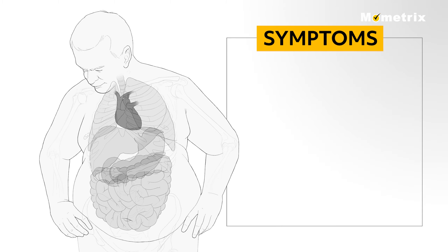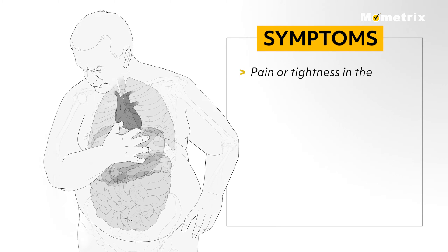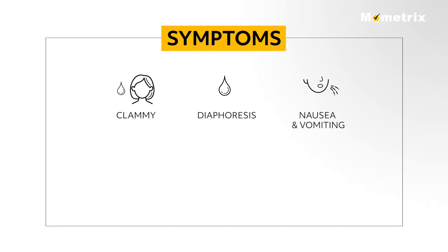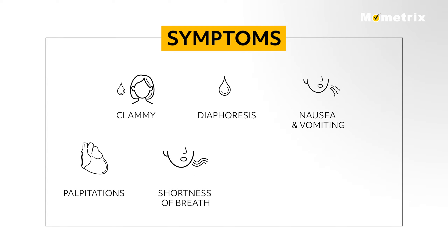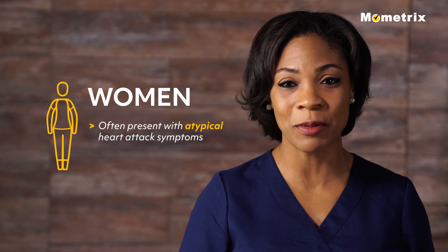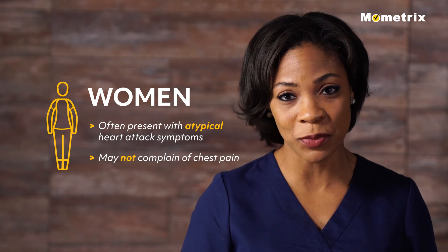Patients experiencing myocardial ischemia or infarction may present with pain or tightness in their chest, jaw, abdomen, or left arm. These patients may also be clammy, diaphoretic, nauseous and vomiting, and may also complain of palpitations, shortness of breath, anxiety, fatigue, and more. It is important to keep in mind that women often present with atypical heart attack symptoms and may not complain of chest pain.